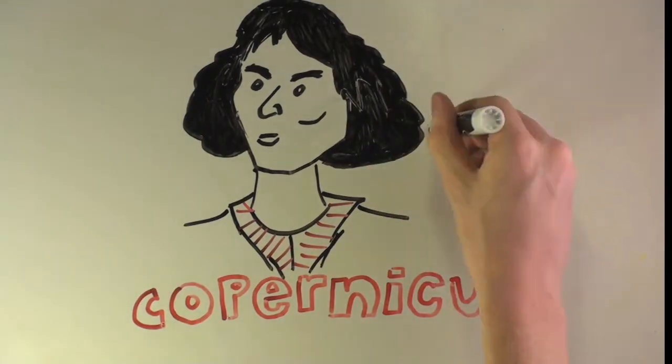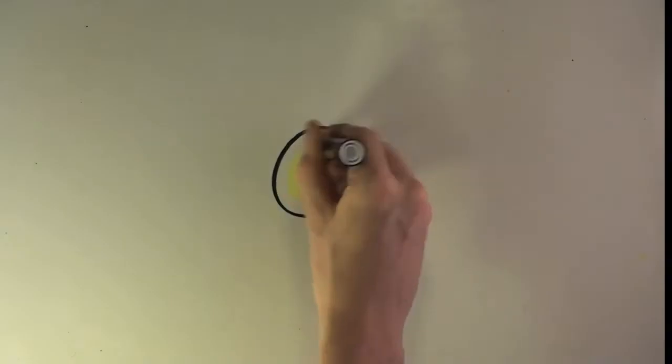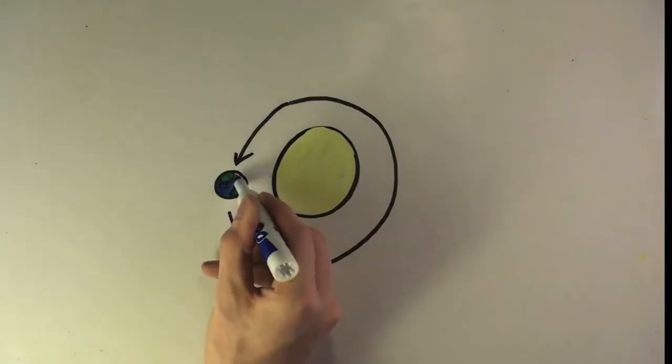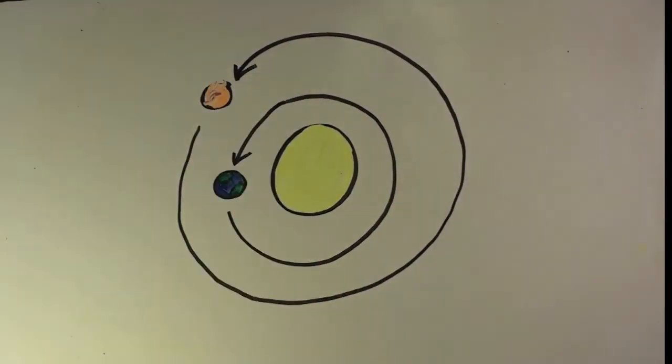This model naturally explained retrograde motion. As we, along with other planets, orbit the Sun, it appears as though the other planets turn around and move backwards in the sky due to the pattern of our respective orbits.